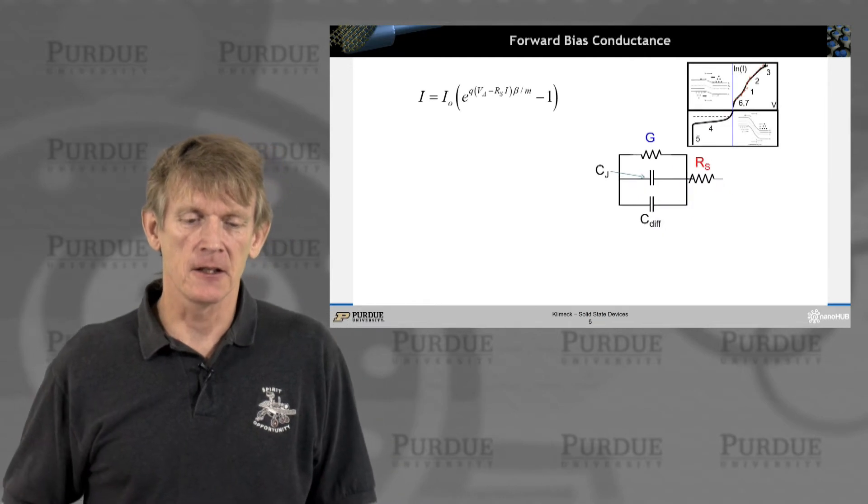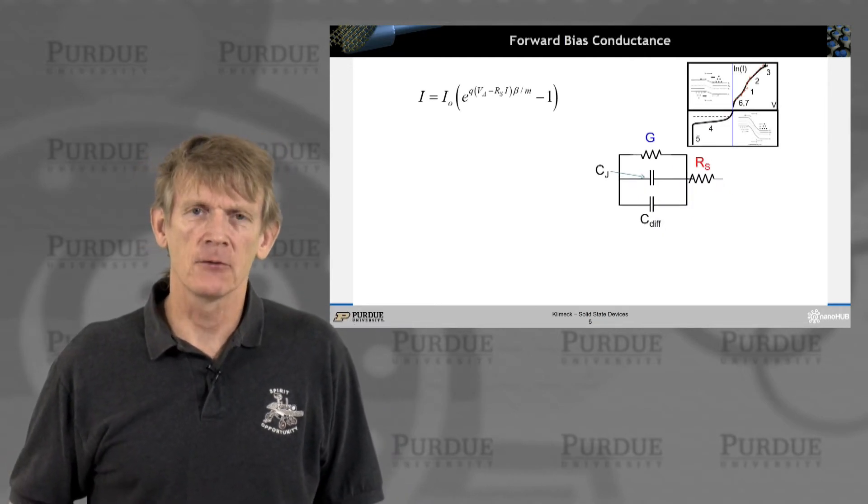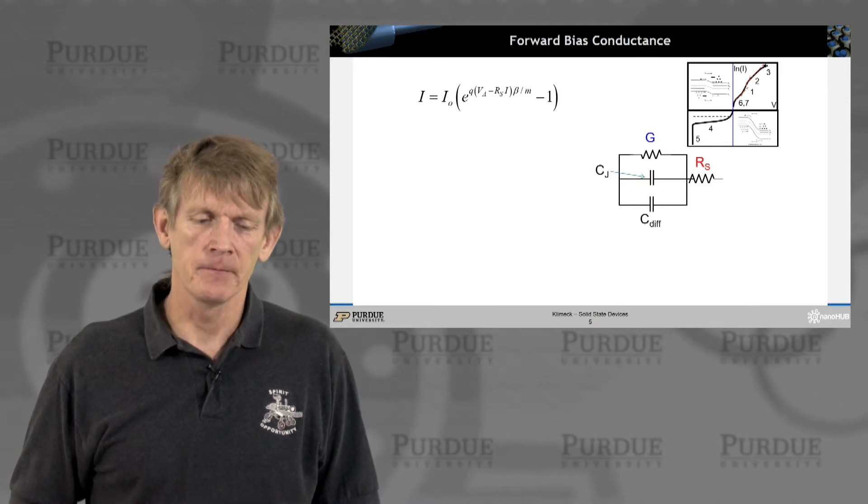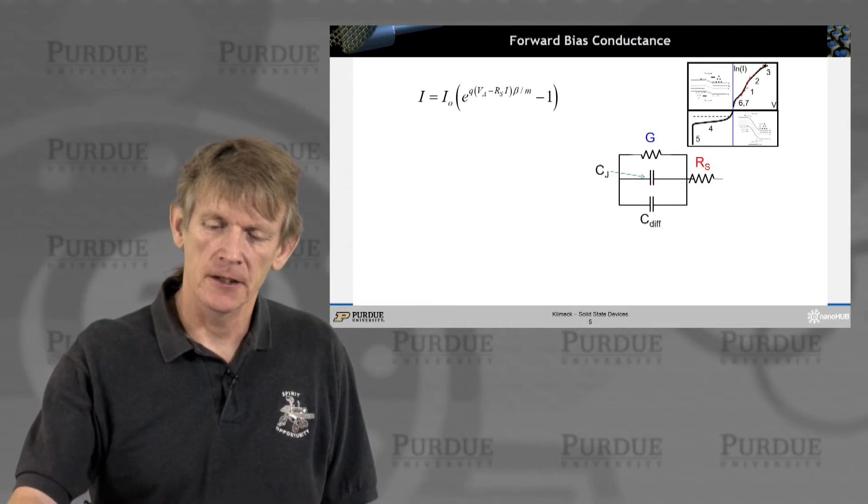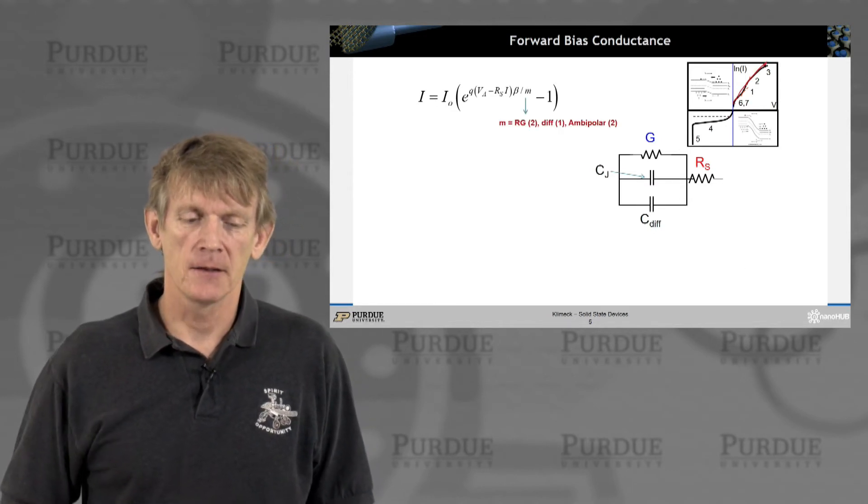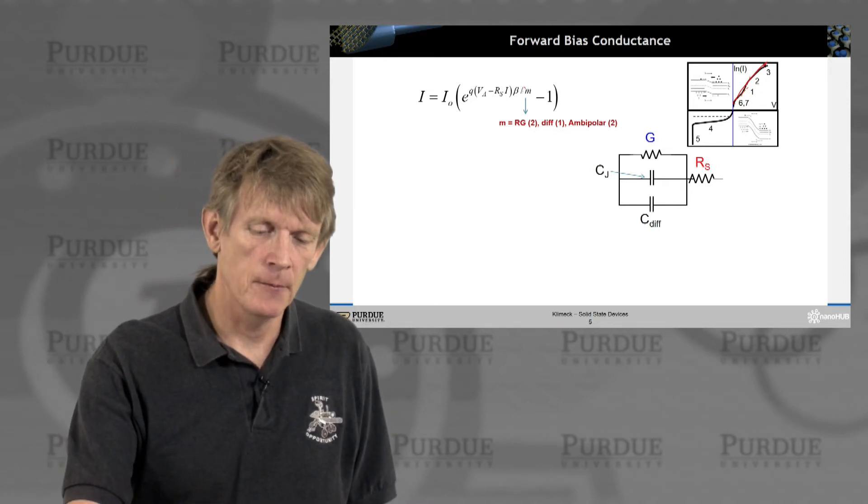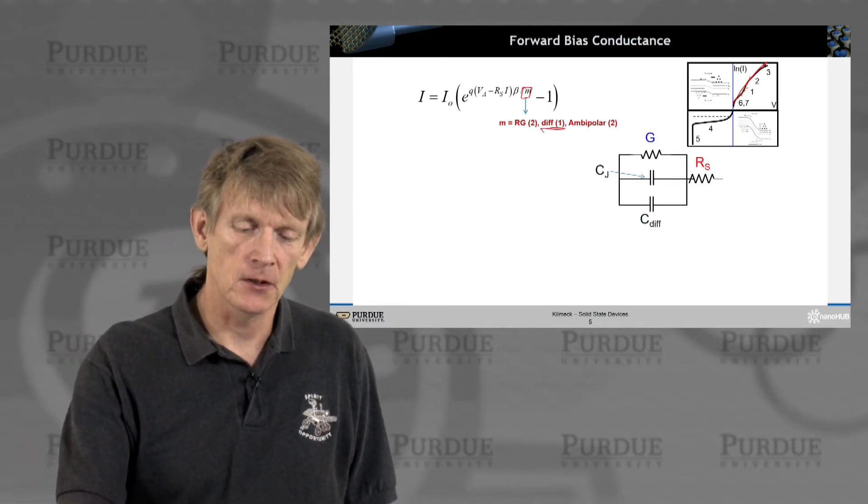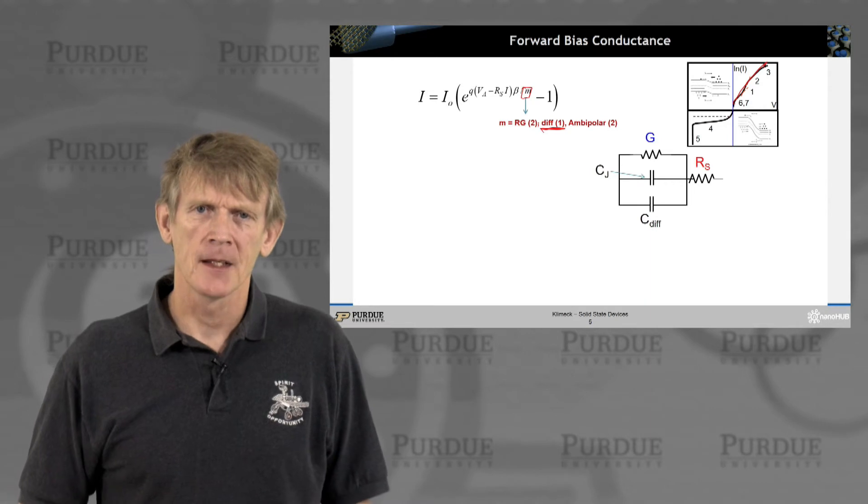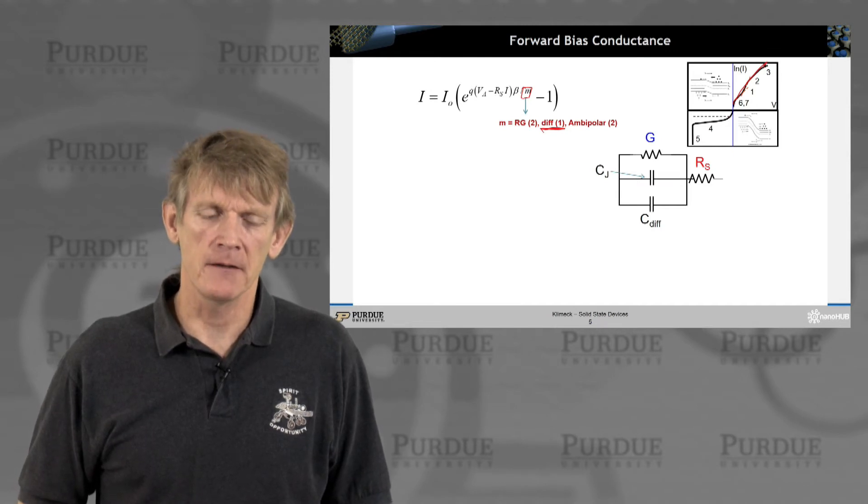Let's get started on the forward bias conductance. We had derived a forward bias current already that was valid in a variety of areas in the forward bias. We've identified an ideality factor that's listed here as m in the expression in the exponent. If you're diffusion limited, ideal, that factor would be one. If you have ambipolar behavior or recombination behavior, those factors would be two.